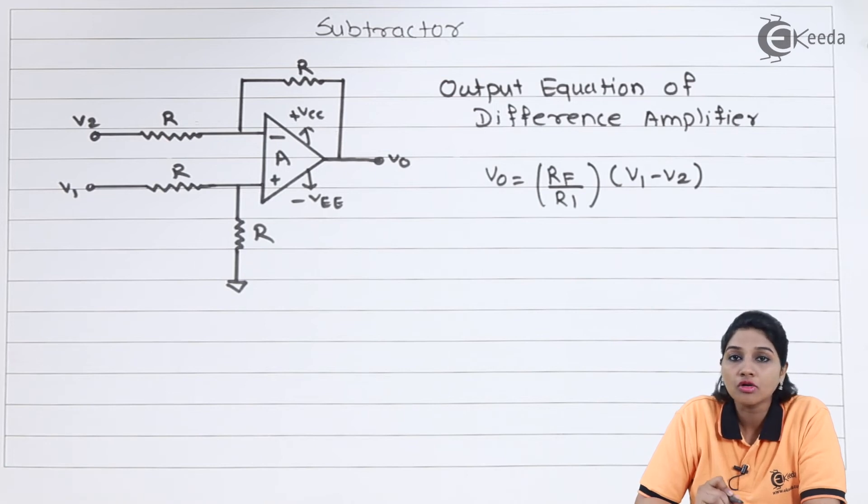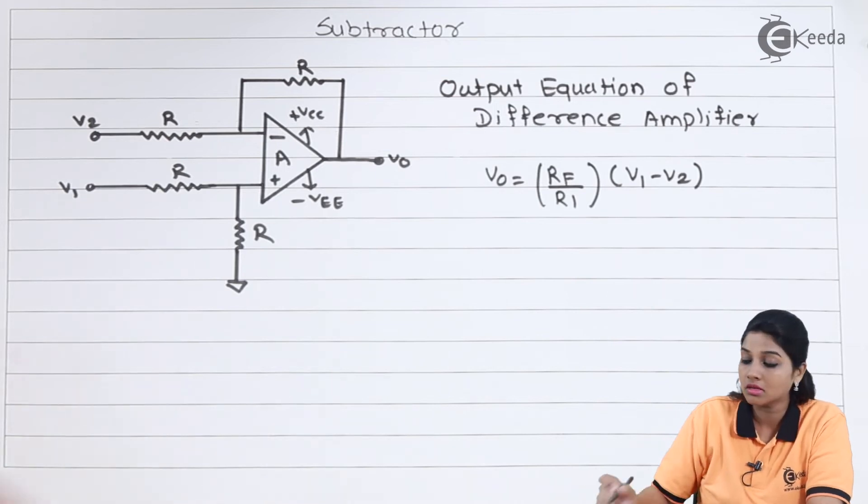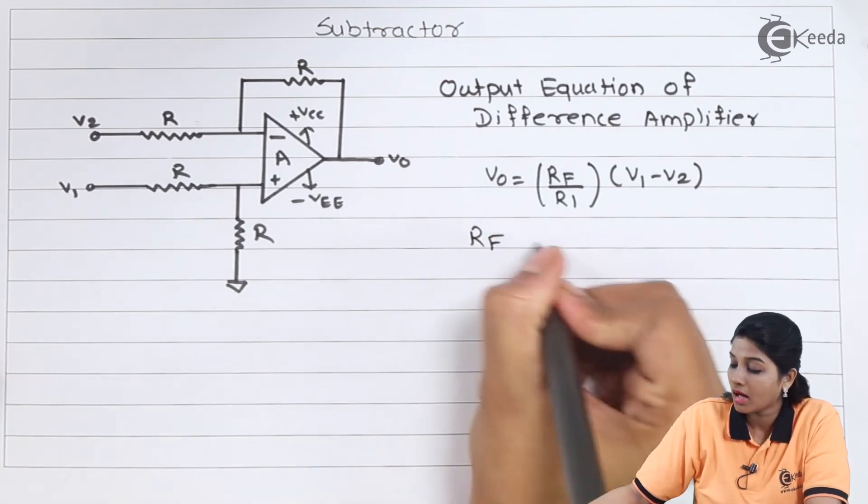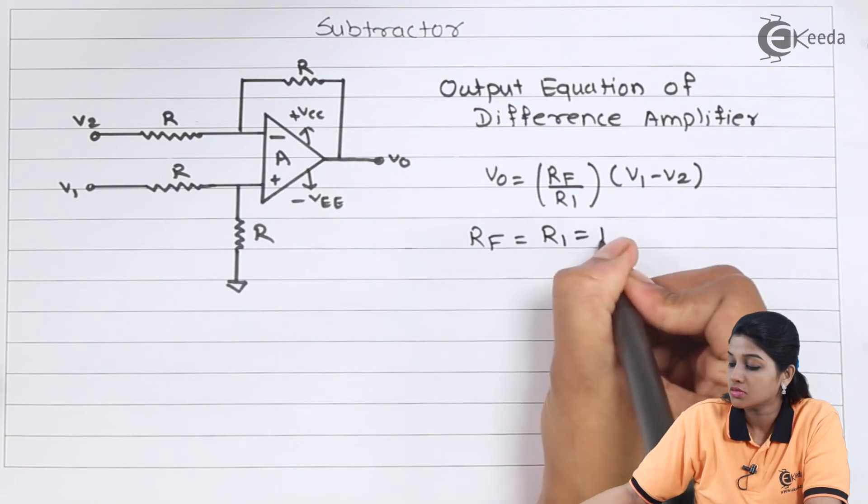But if we look at the circuit of subtractor, then in this case the value of all the resistors used in the circuit is same. That means RF equals R1 equals R.